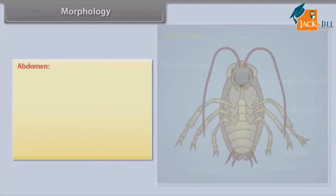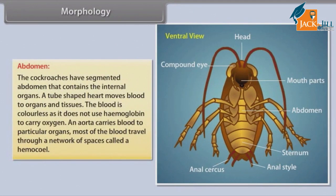Abdomen: The cockroach has a segmented abdomen that contains the internal organs. A tube-shaped heart moves blood to organs and tissues. The blood is colorless as it does not use hemoglobin to carry oxygen. An aorta carries blood to particular organs. Most of the blood travels through a network of spaces called the haemocoel.